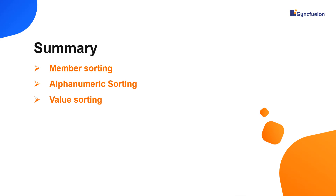In this video, I showed you how to sort data in the pivot table with respect to its members and values. You can download a working example from the GitHub link in the description below. I've also included a link where you can check if you're eligible for our community license, which provides a free license key to use all our products. Thank you for watching — if you found it useful, give it a like and subscribe to our channel.